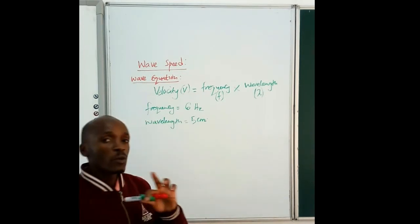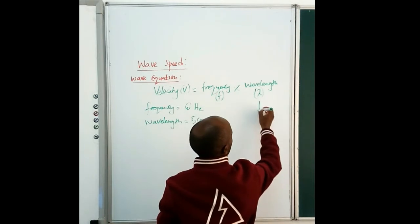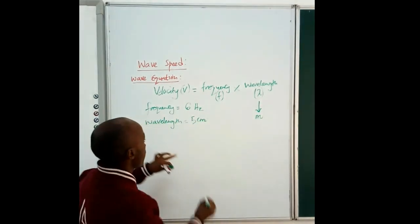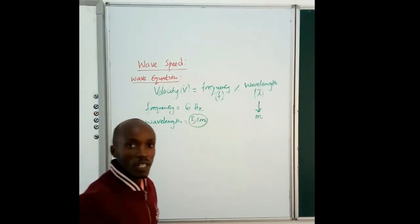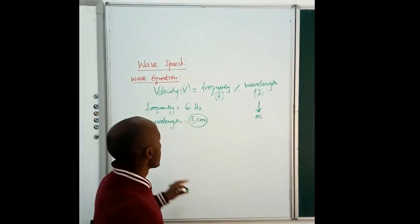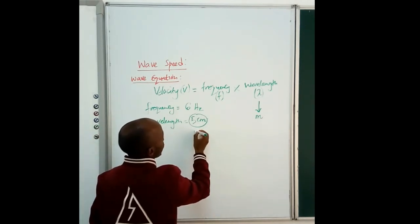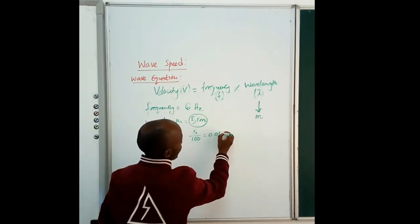Something we need to realize when we do this analysis is that the wavelength here should be in meters. And therefore, this measurement of our wavelength in centimeters, we need to change it to the SI unit, which is meters. And therefore, it would be 5 divided by 100 to give us 0.05 meters.